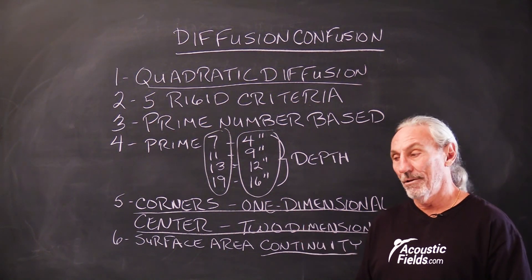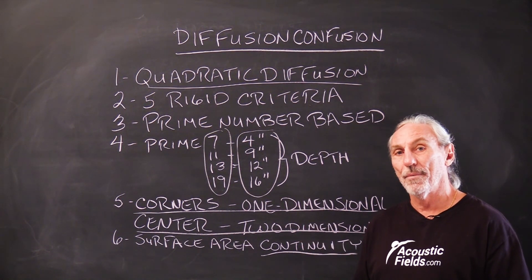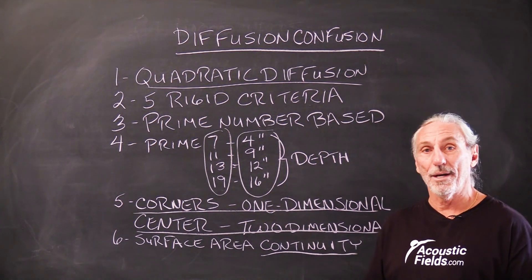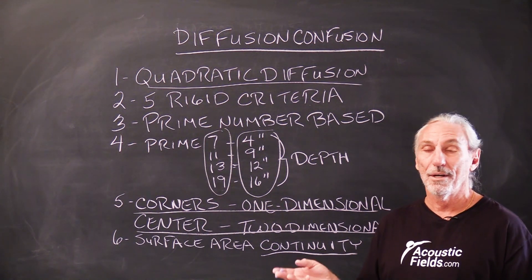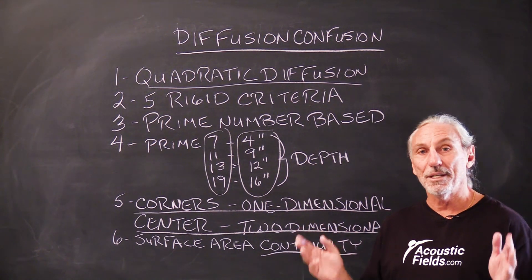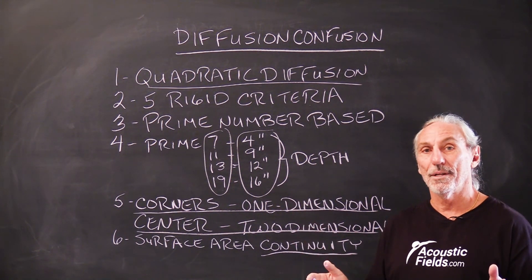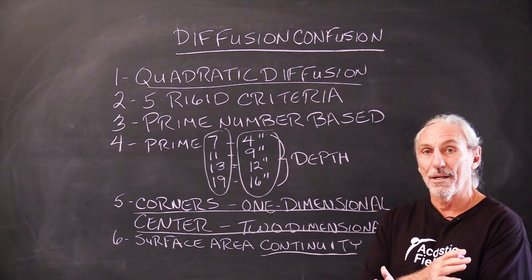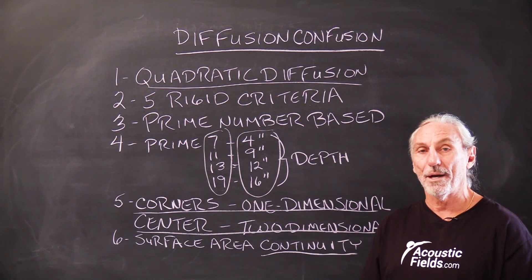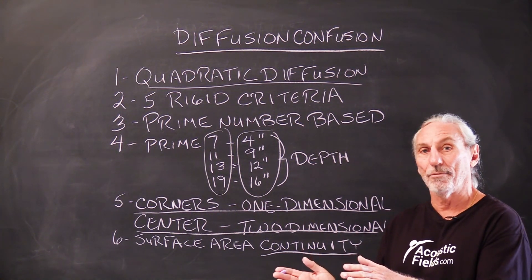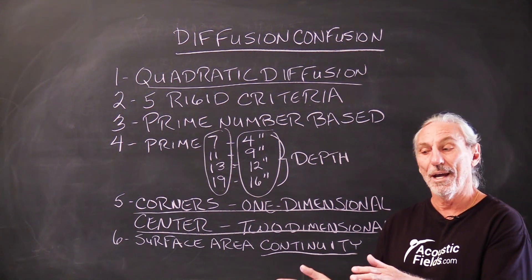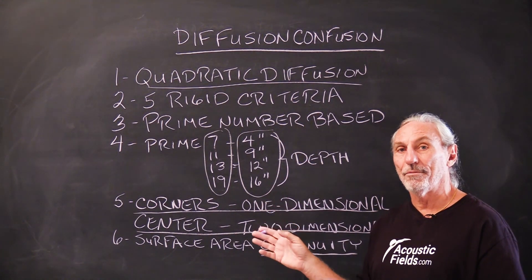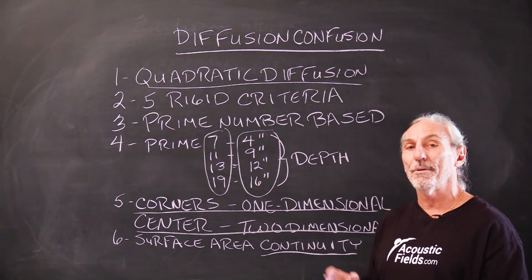We don't want technologies competing against each other as in the photo we're showing you. We want things to be balanced. In the corners, we have one dimensional diffusion, in the center, we have two dimensional diffusion, and we have to have surface area continuity. So be very careful. If you're thinking about diffusion and you call me, the first question I'm going to ask you is why? I know you're not going to have the right answer. I've been doing this 14 years now, 30, 40 phone calls a day. I see constant patterns.